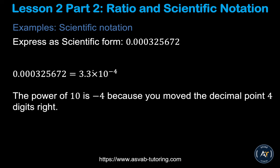The same method applies to decimal numbers. The first significant digit here is 3, so place the decimal after it, giving 3.3 — or 3.2 depending on rounding and the answer options. For decimal numbers, you count digits from right to left instead of left to right. Counting gives you four places, and since you move left you apply a negative sign: the result is 3.3 times 10 to the power negative 4.